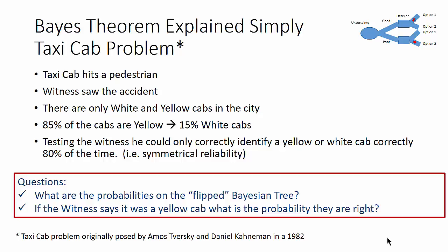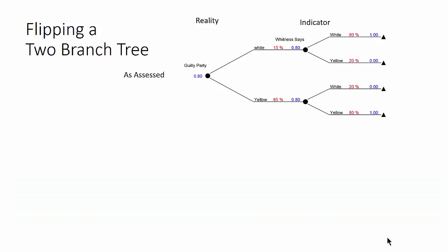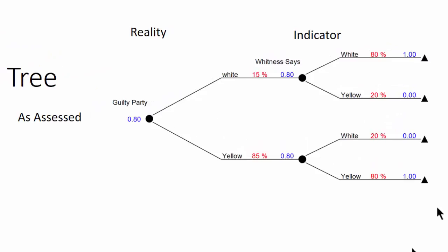The question we're trying to answer is what are the probabilities on the flipped Bayesian tree and if the witness says it was a yellow cab that caused the accident what is the probability that they are right. So let's start with the basic tree. The guilty party could either be a white cab or a yellow cab with probabilities of 15% or 85%.